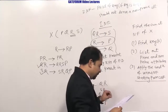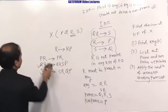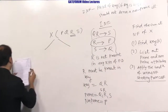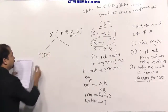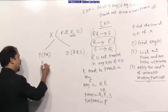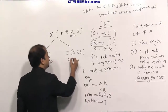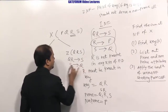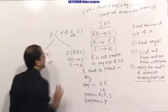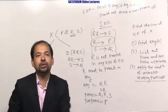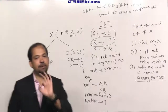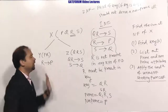X is decomposed into Y (P,R) and Z (Q,R,S). In Y, the FD is R→P. In Z, the FDs are QR→S and S→Q. All three original FDs are preserved in the decomposed relations — so the decomposition is dependency-preserving.